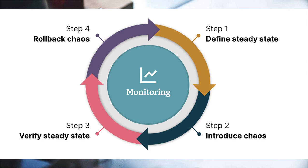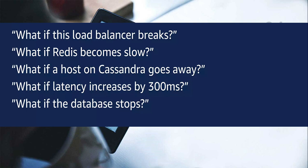To summarize: the first step is to define the steady state, the second is to introduce the chaos using any chaos templates, the third is to verify the steady state, and the fourth is to roll back the chaos. Typical scenarios we test include: what if the load balancer fails, what if Redis cache fails, what if RDS fails, what if latency increases by some parameter, or what if the database gets stopped. All these can be verified with chaos testing.